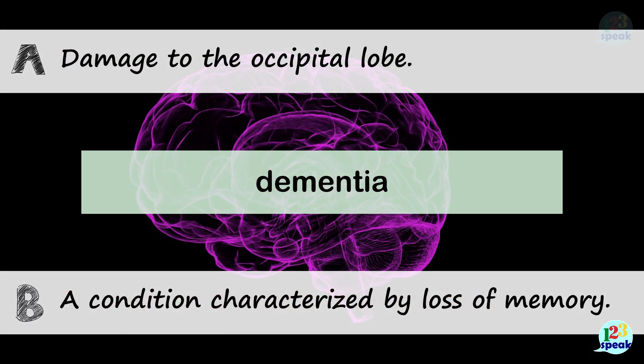Dementia. A. Damage to the occipital lobe. B. A condition characterized by loss of memory. The correct answer is B: a condition characterized by loss of memory.